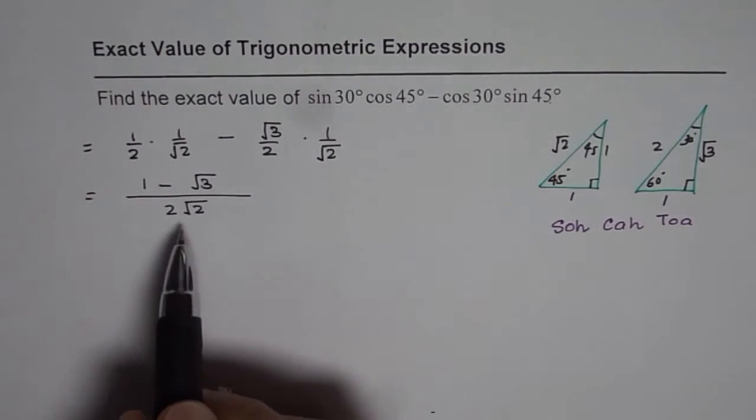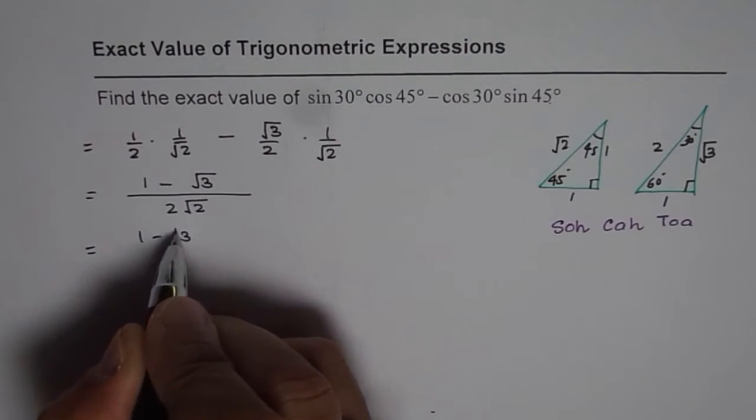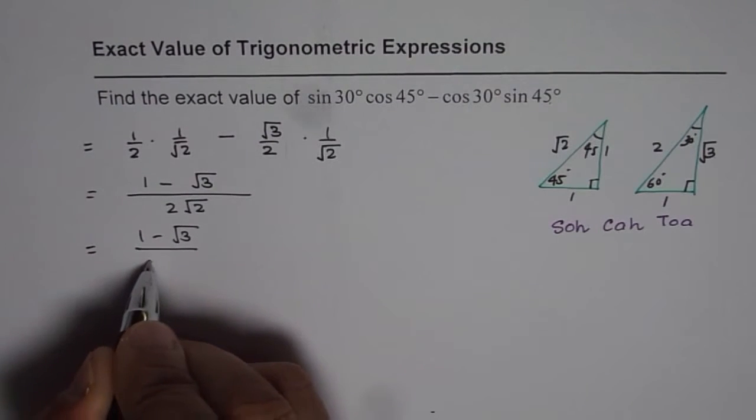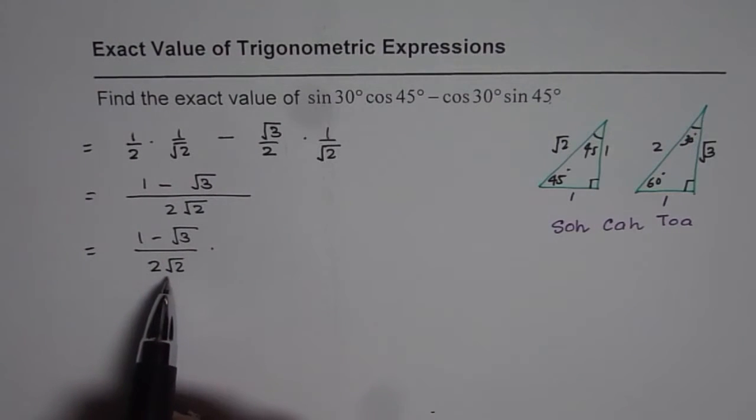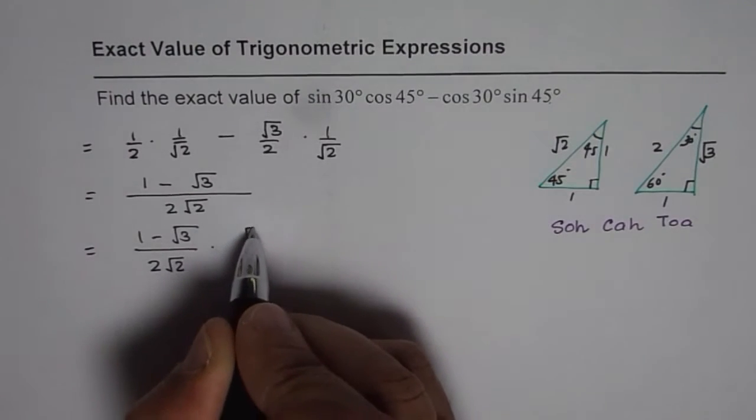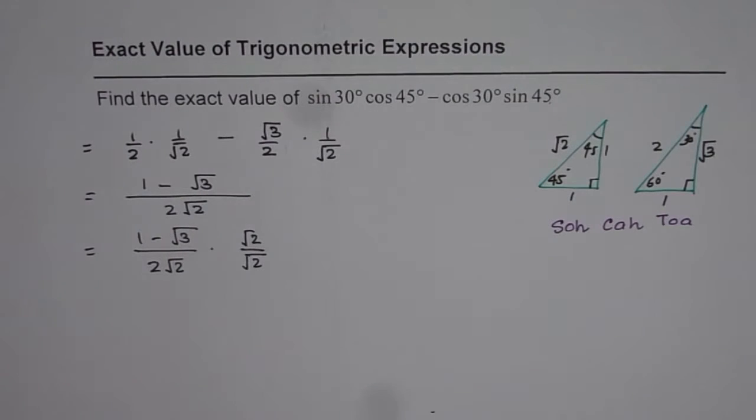Now it is good practice to rationalize this expression and write without radicals in the denominator. So we'll rationalize 1 minus square root 3 divided by 2 square root 2. In this case the conjugate is square root 2 itself, so we multiply and divide by square root 2.